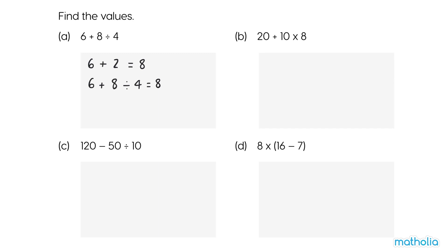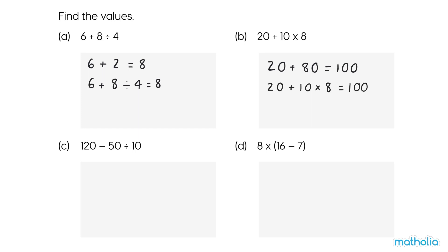B: 20 plus 10 times 8. Multiply first. 10 times 8 equals 80. 20 plus 80 equals 100. So 20 plus 10 times 8 equals 100.